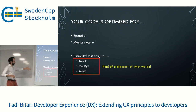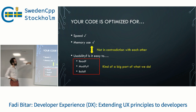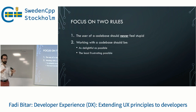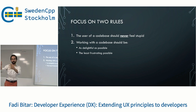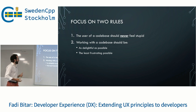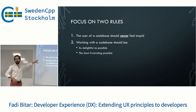These three things are pretty much what we do as developers. I want to highlight that optimizing for speed and memory use and optimizing for usability are not contradicting by any means — you can optimize for all three. I want you to focus on two very simple rules. First: the user of your code base should never feel stupid. Just as you don't want your end users to be deer in headlights and walk away, why would you want your developers to experience that? Second: working with your code base should be as delightful and as least frustrating as possible. These are principles borrowed from UX — someone figured this out for general users, and I'm saying: why don't we do this for developers as well?